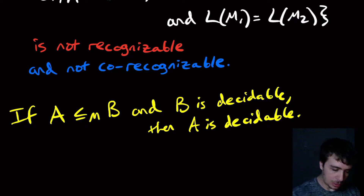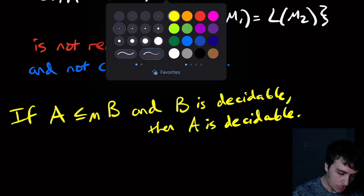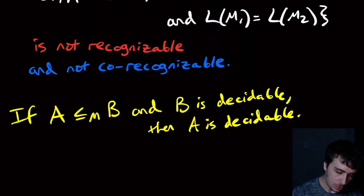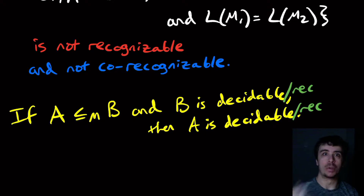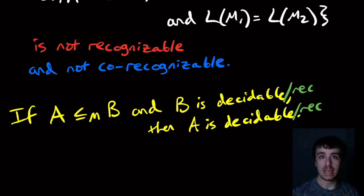It turns out you can extend this to work with recognizable: if B is recognizable then A is recognizable, for the exact same reason.